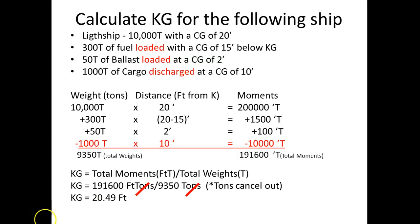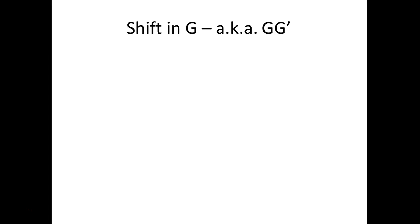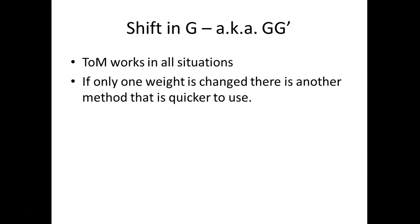The theory of moments is very useful when you're dealing with multiple weights moving — adding weights, subtracting weights, multiple weights in motion. But in some situations there might just be one weight in motion. An example might be: you finish loading, calculate the center of gravity, then realize you forgot one container. You load that container on — that's going to shift your G a little bit. You can go back and do the entire theory of moments again, or you can use a simplified version called shift of G.